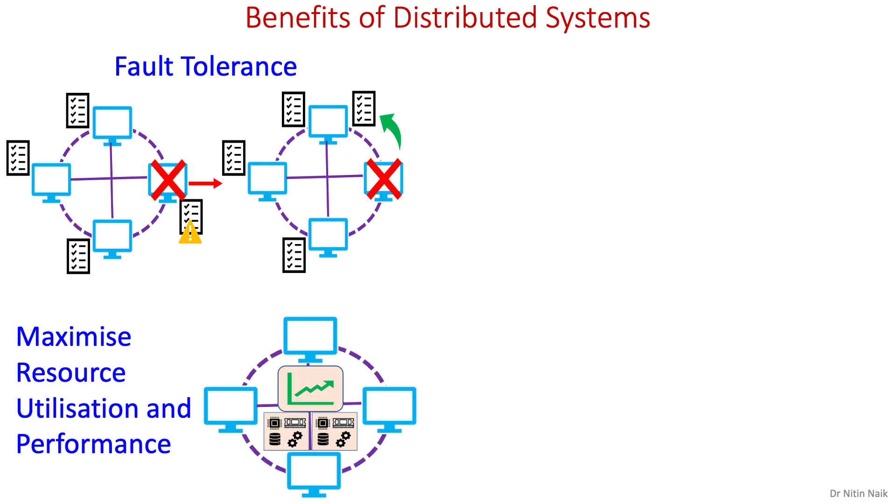Second, maximize resource utilization and performance. The existing resources in a distributed system can be shared and accessed across multiple nodes for maximizing resource utilization and workload can be shared among the nodes to increase the performance of a distributed system.